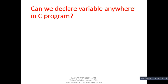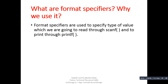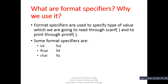Next question: can we declare a variable anywhere in a C program? Answer: no. Next question: what are format specifiers and why do we use them? Answer: format specifiers are used to specify the type of value which we are going to read through scanf and print through printf. For integer we use %d, for float we use %f, for char we use %c.